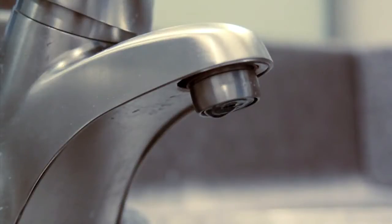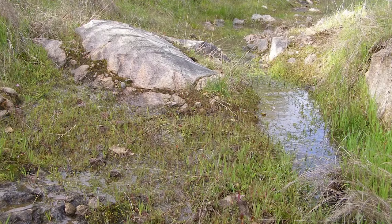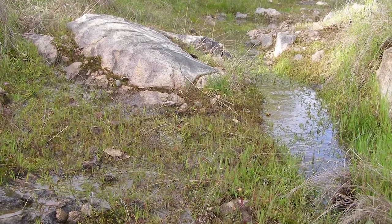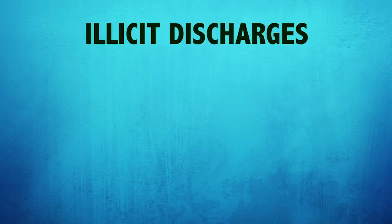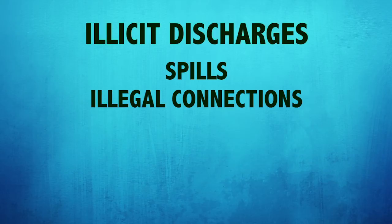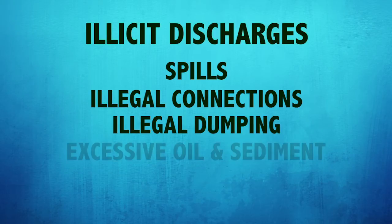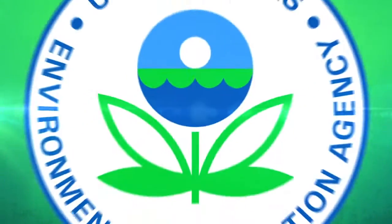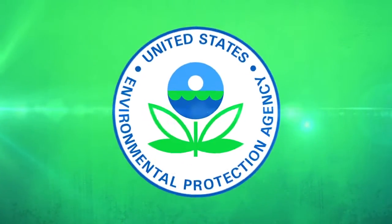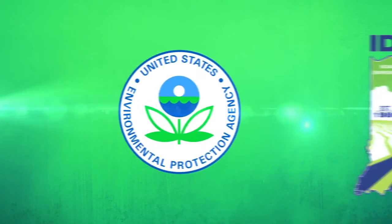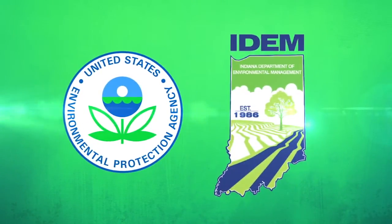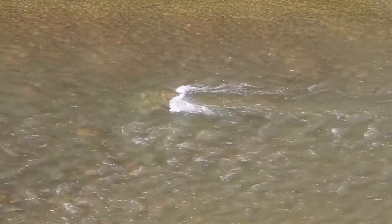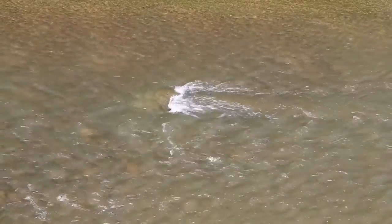They also affect our drinking water. Discharges not composed of entirely stormwater are considered illicit discharges and can be found in the form of spills, illegal connections, illegal dumping, and excessive oil and sediment. Your community is regulated by the EPA and the Indiana Department of Environmental Management in order to prevent or minimize pollutants from entering our waterways.